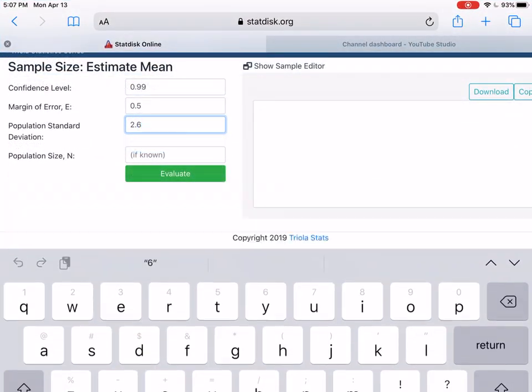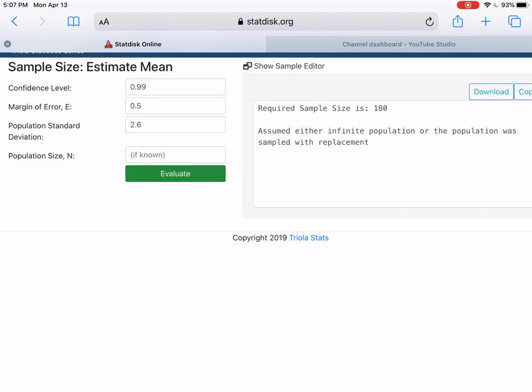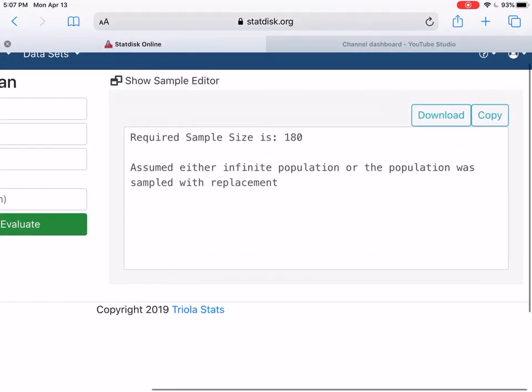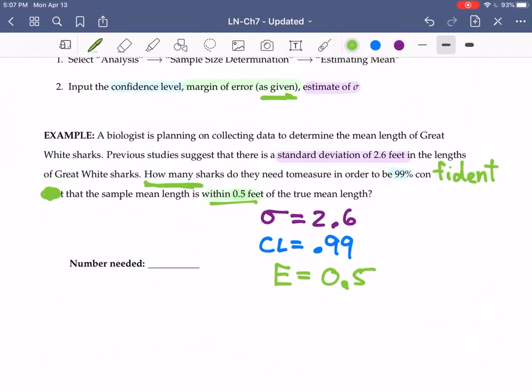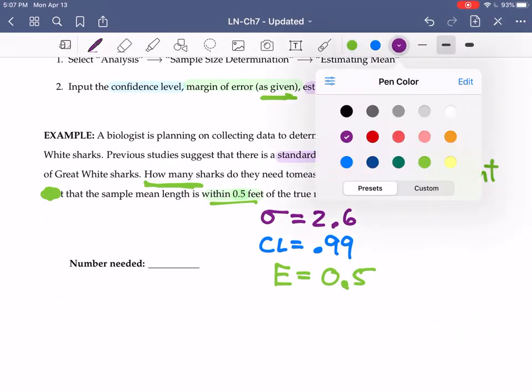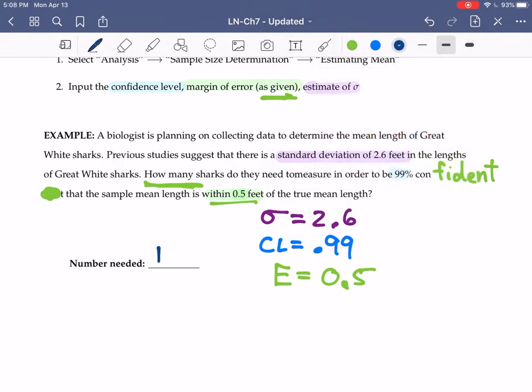We input all that information and we evaluate, and it spits back a number. The required sample size is 180. So that's our answer, 180 sharks.